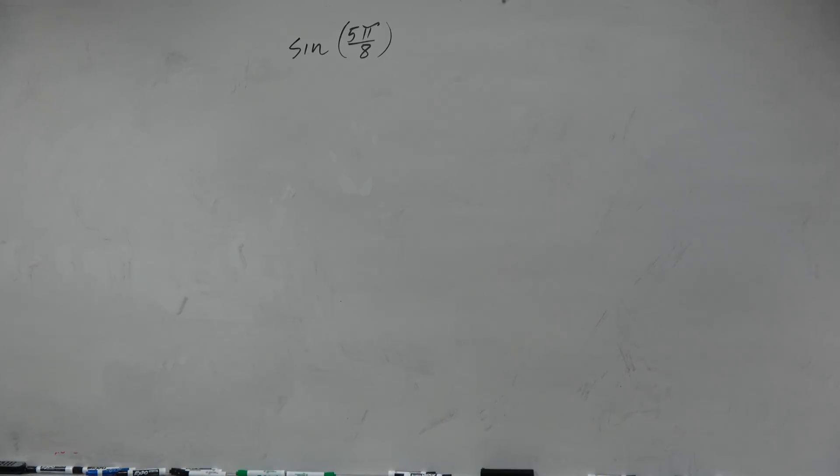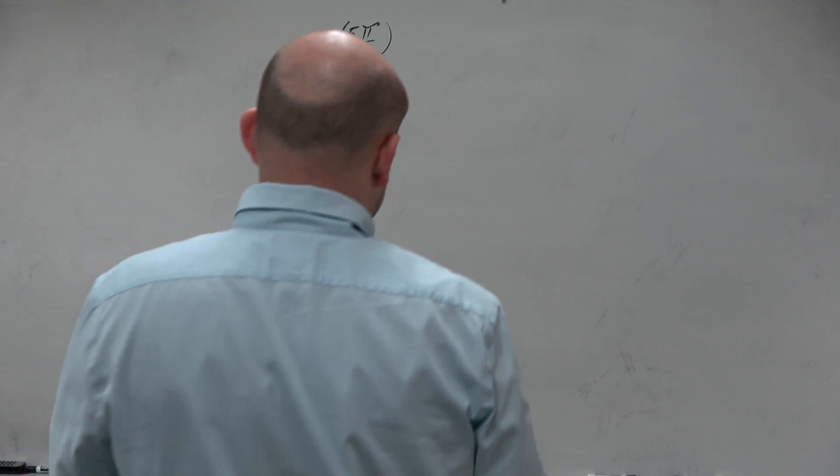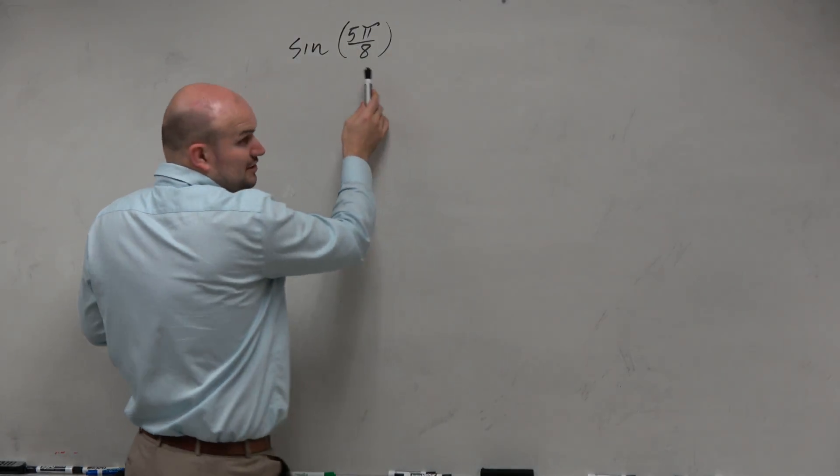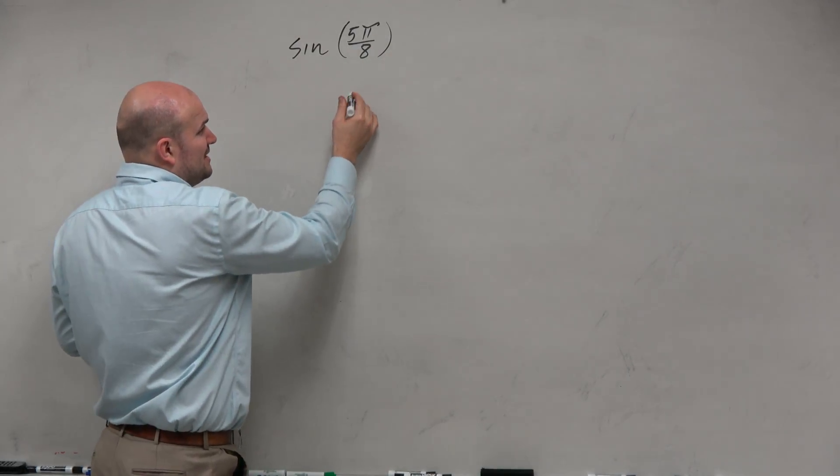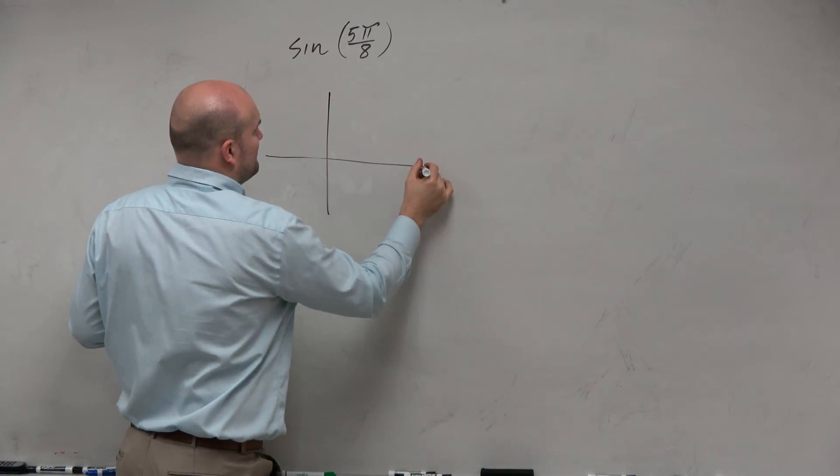You know, it's just good to know that right now we don't have this on the unit circle. So we do not have this angle on the unit circle. And sometimes this is a little bit confusing because you've got to think, where exactly is 5π over 8?